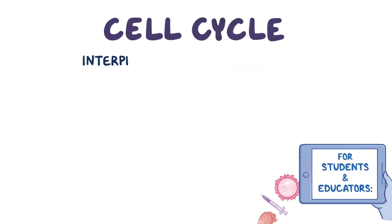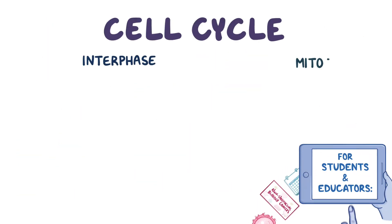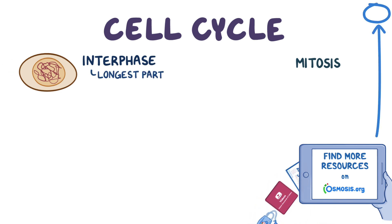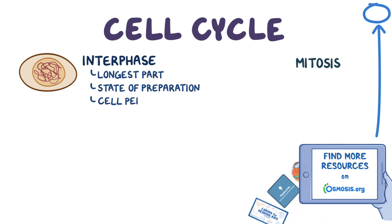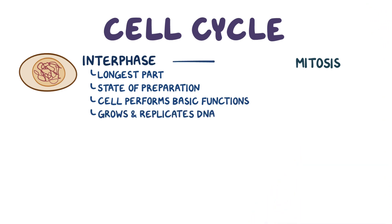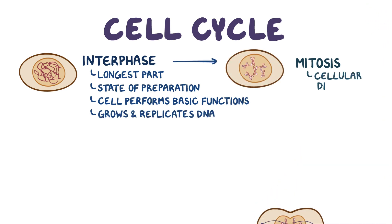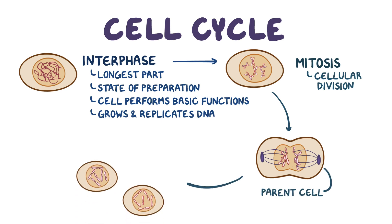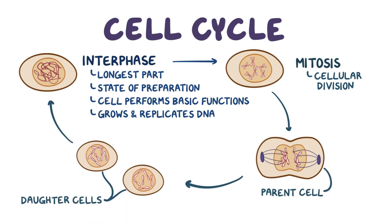The cell cycle has two phases: interphase and mitosis. Interphase is the longest part of the cell cycle, and it's a state of preparation during which the cell carries out its cell functions and grows and replicates its DNA to prepare for mitosis, or cellular division. After a parent cell divides, each of the two daughter cells enter interphase again.